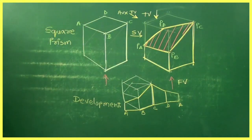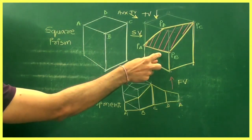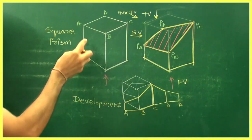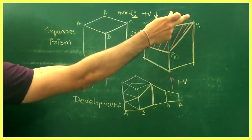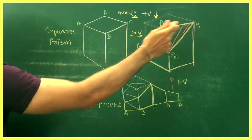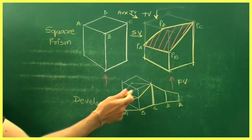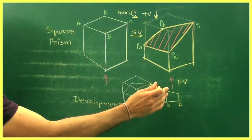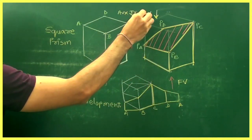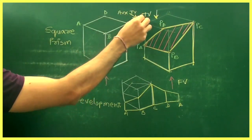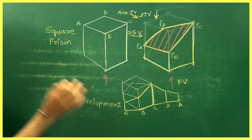We have a square prism. If you cut it at an incline, it will look like this — a square prism cut at 45 degrees. We'll have four points: Pa, Pb, Pc, and Pd. In this problem, we are going to draw the front view, sectional top view, sectional side view, auxiliary top view, and development.